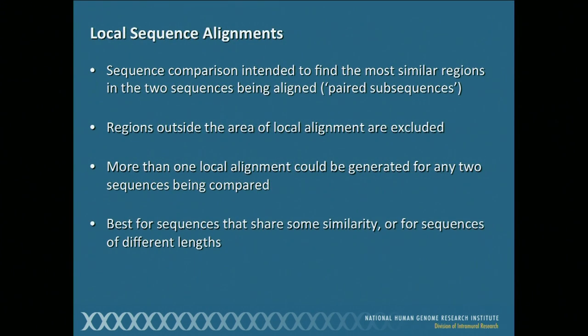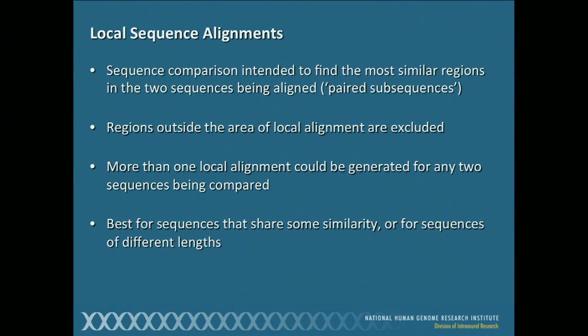Instead, we're going to look at local sequence alignments. What this does is try to find as many regions of similarity between the two sequences as possible — these are called paired sub-sequences, a glorified term for finding two regions within those sequences that can align with one another. Any regions outside the area of the local alignment are excluded. Because of the way this method works, you could actually have multiple alignments for the same two sequences, which is actually a good thing because it focuses on regions of high similarity. This is the method of choice for sequences that share some similarity or for sequences of different lengths.